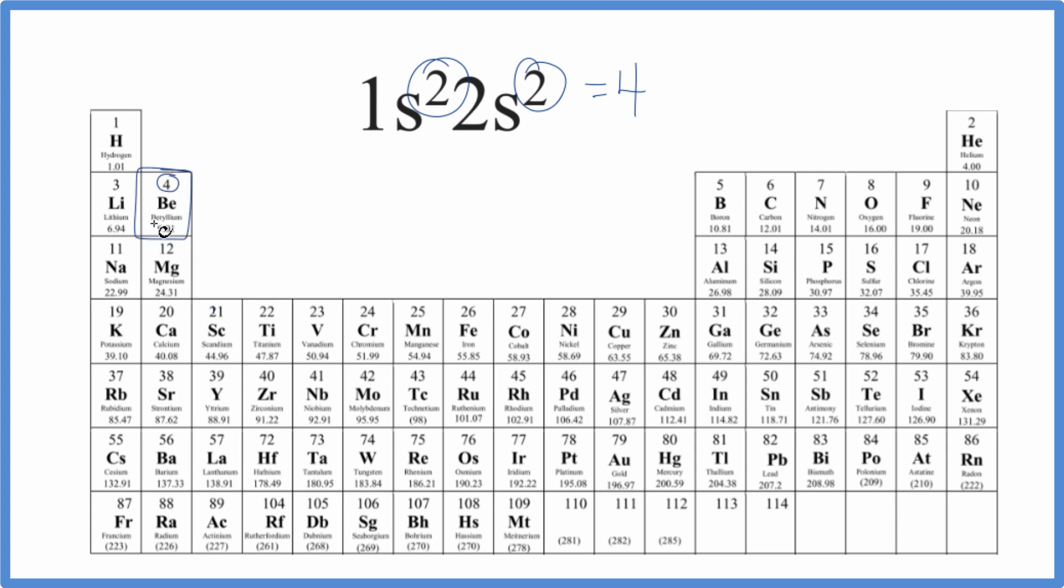and that'll be equal to the electrons. So 1s2, 2s2 with 4 electrons, that's going to be beryllium.